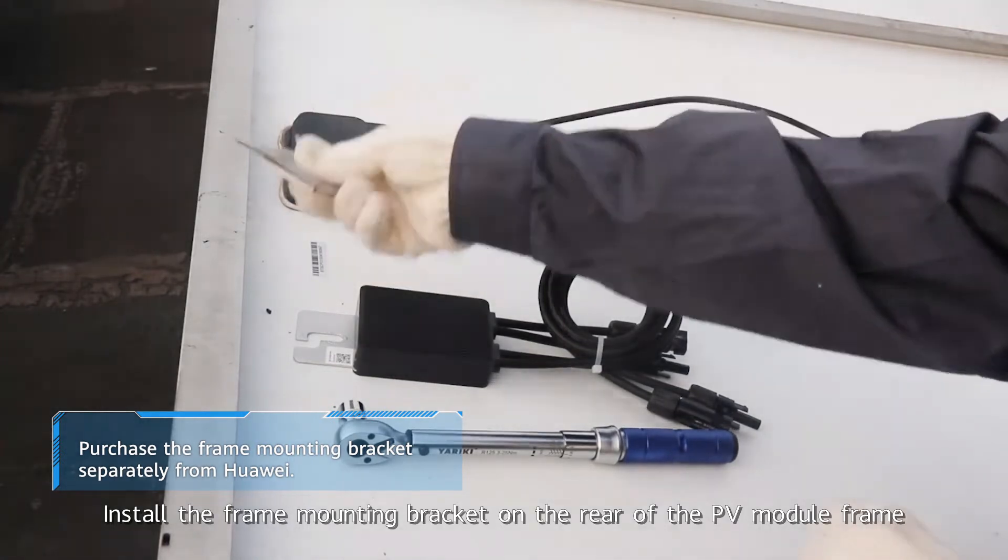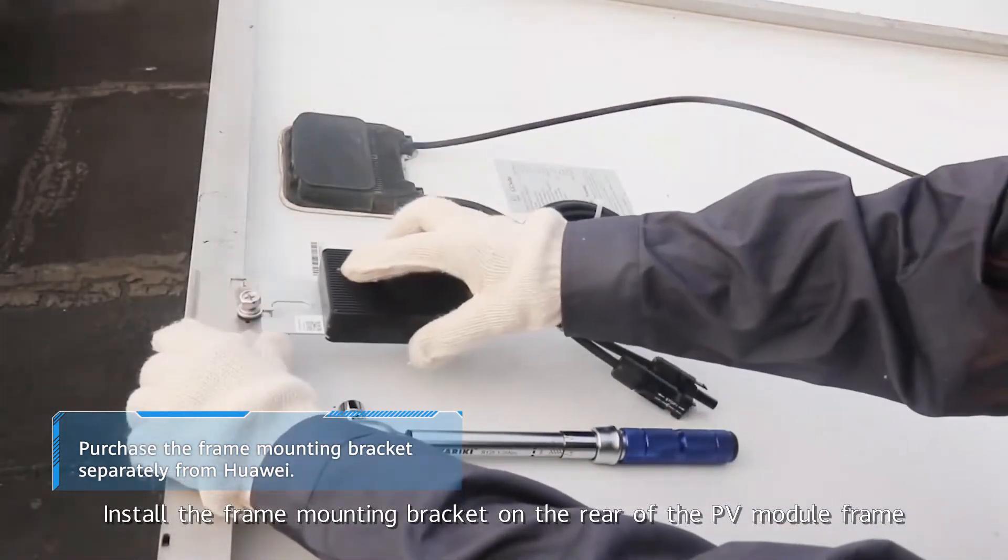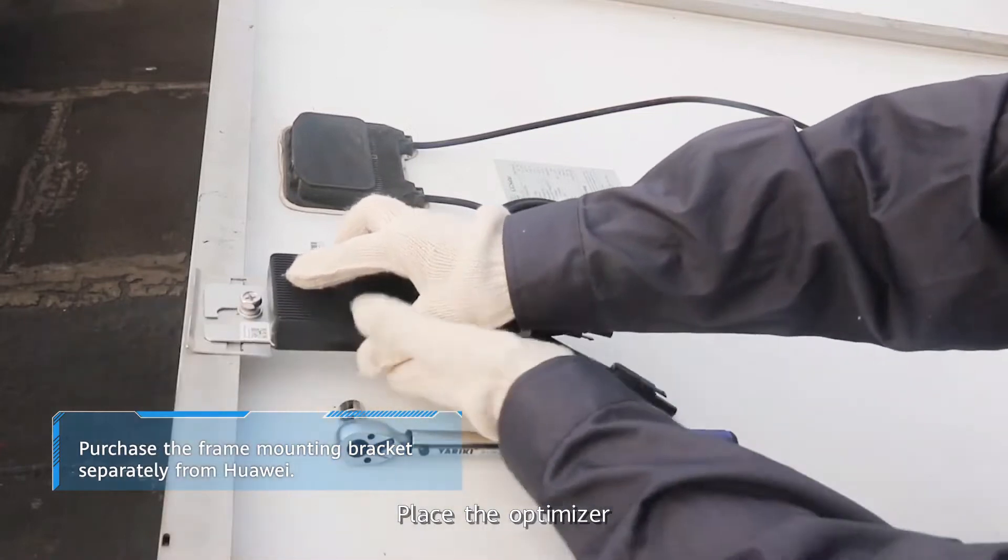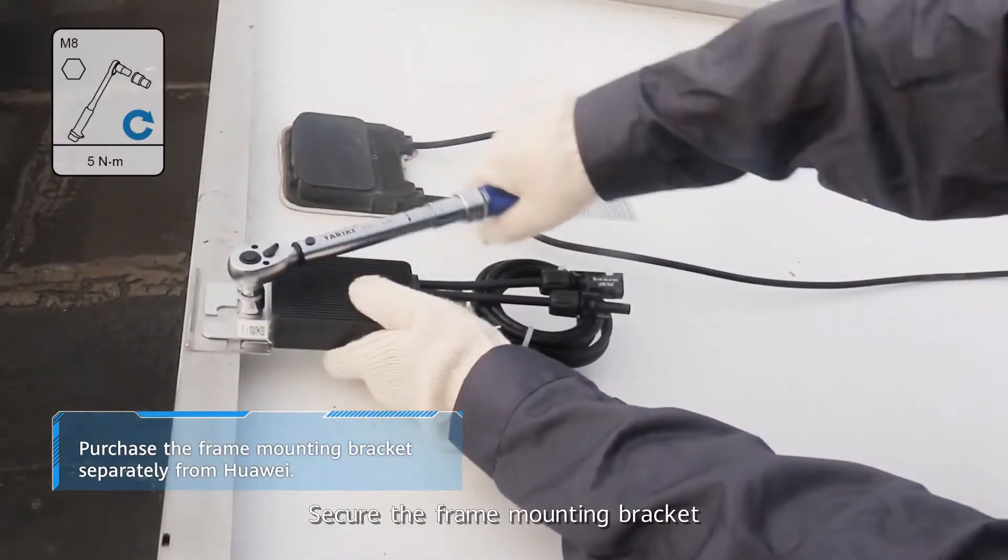Install the frame mounting bracket on the rear of the PV module frame. Place the optimizer. Secure the frame mounting bracket.